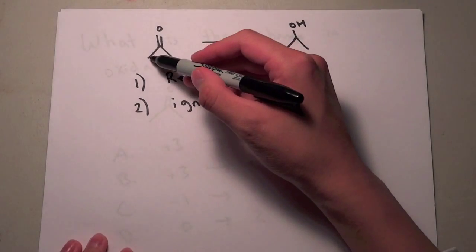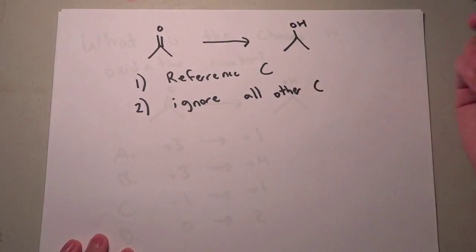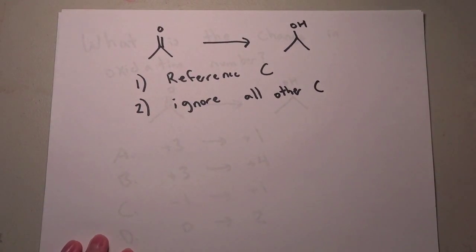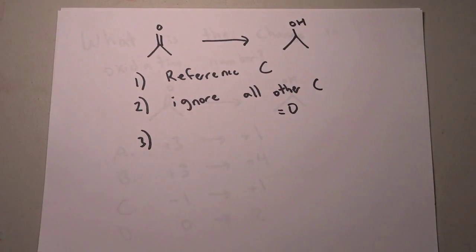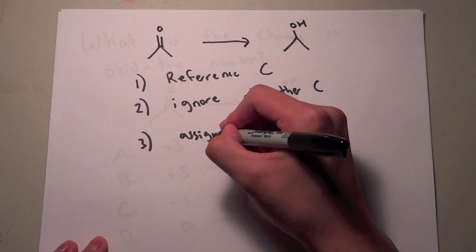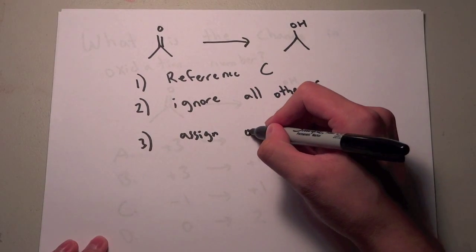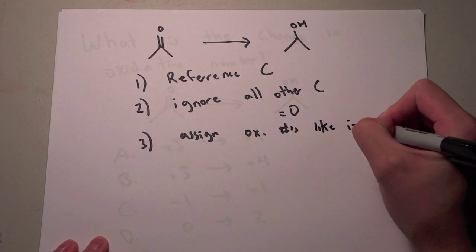So for example like this, we see that this carbon and that carbon are equivalent in both sides. There is nothing that is changing between them so we ignore them. We pretend that they are just zero and so we give those an oxidation state of zero. And the final thing is just assign oxidation numbers the same way you would before, like in inorganic molecules.